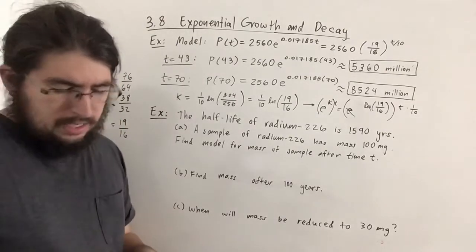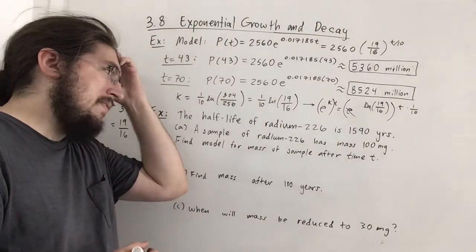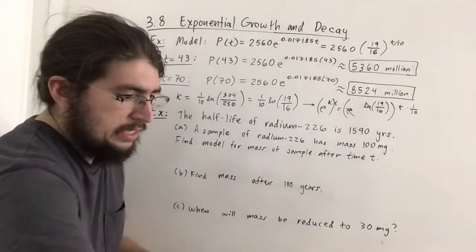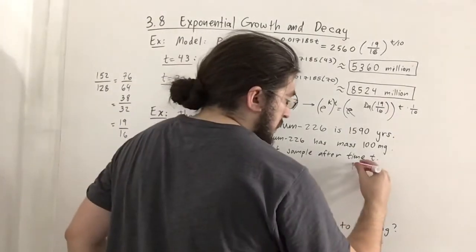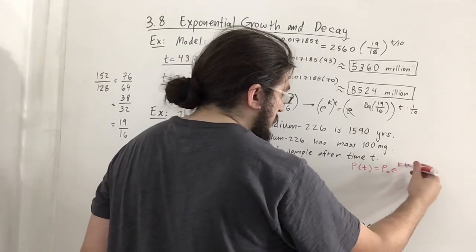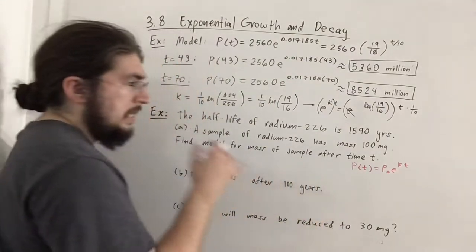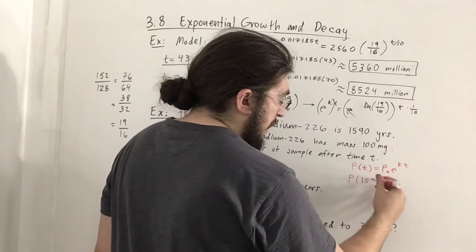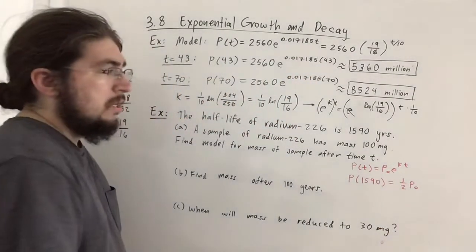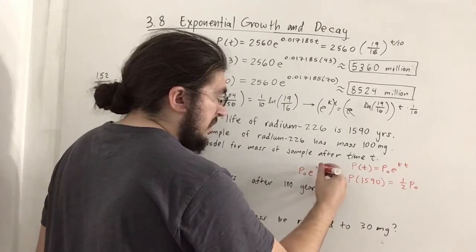After 1590 years we'll have half of our original amount, which is telling for the problem. We'll use the exponential model: P(t) = P₀·e^(kt). Whatever the initial amount is, that's P₀. Since the half-life is 1590 years, plugging in t = 1590 gives exactly half: P₀·e^(1590k) = (1/2)P₀. Dividing by P₀: e^(1590k) = 1/2, and you can solve for k.